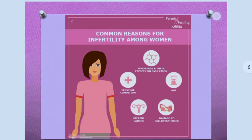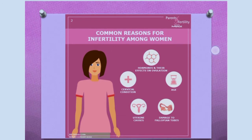What are the common reasons for infertility among women? The common reasons are cervical conditions, that is medical conditions, hormones and their effects on ovulation — if anyone is taking hormonal medication, it also affects ovulation. Other causes include age, uterine causes, as well as damage to the fallopian tubes.